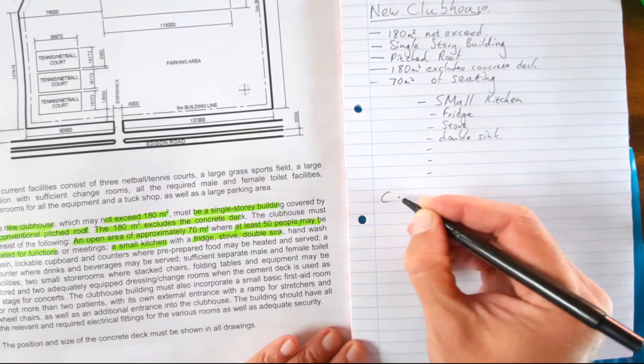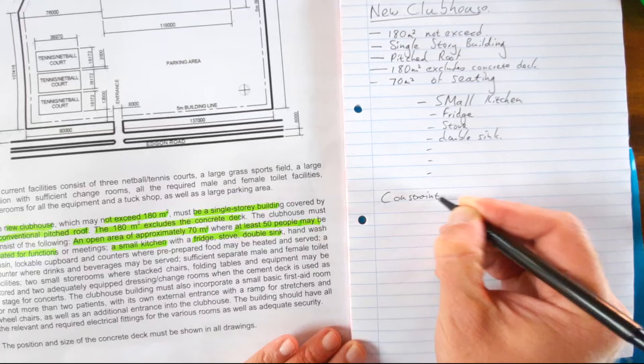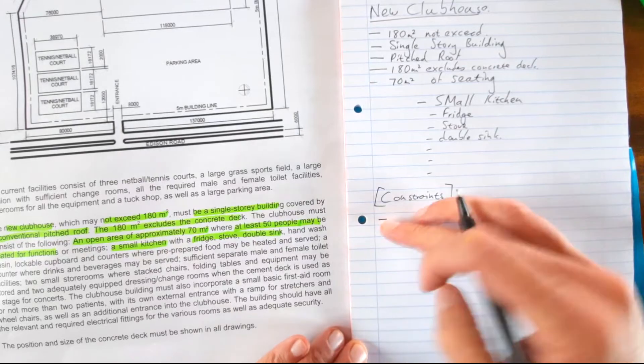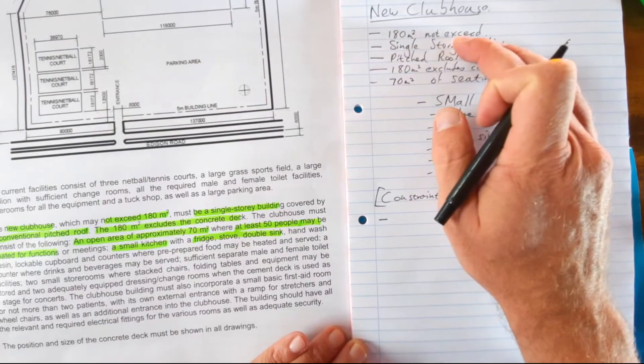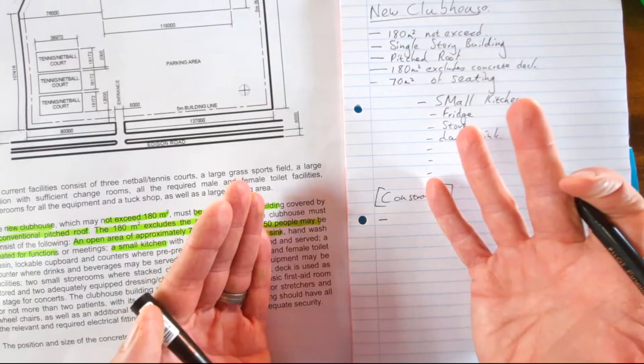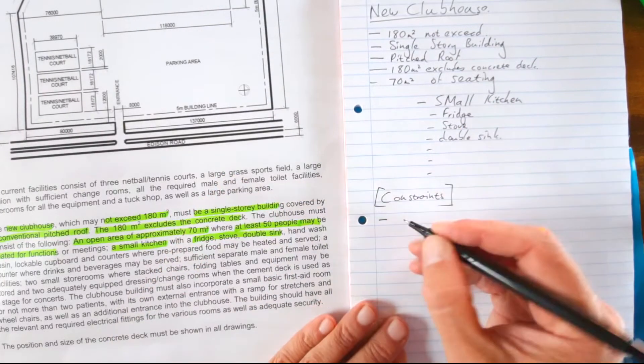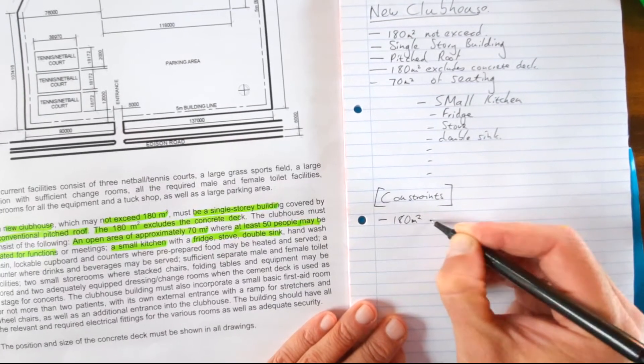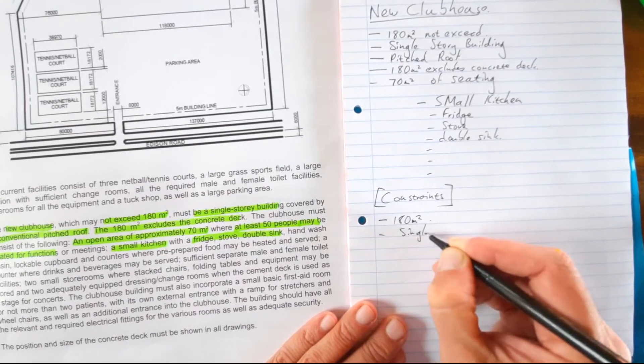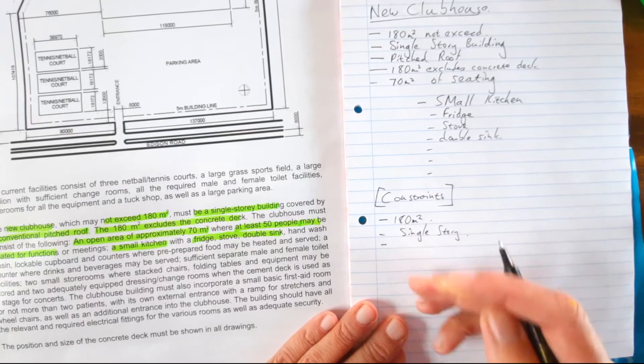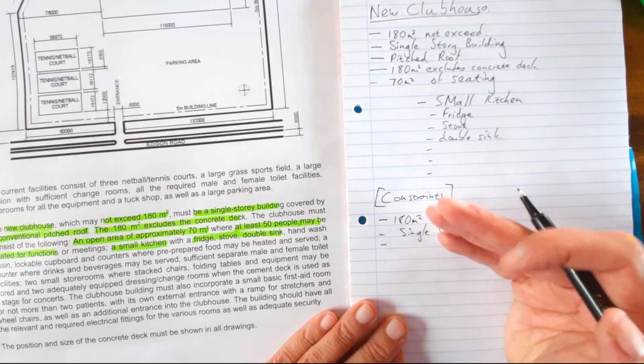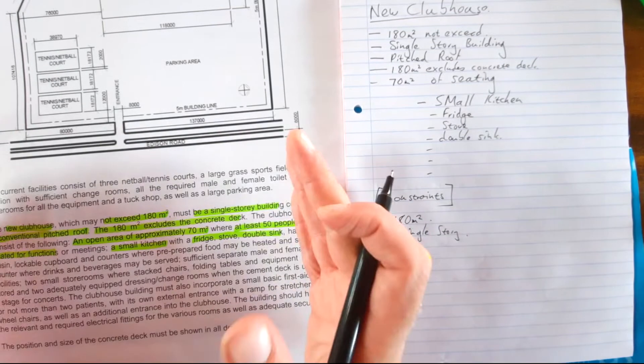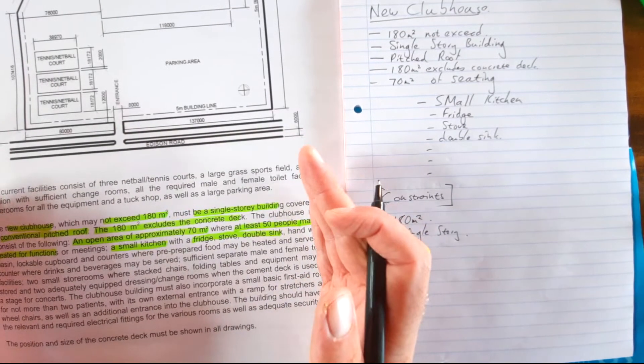In the end here we're going to have constraints. What is a constraint? A constraint is something that restricts you, that limits you. So something that's a specification here is the 180 square meters that you may not exceed, but it's also of course a constraint. So you can again word it: I am constrained by the 180 square meters limit. You are limited by the single story—you can't build a double story. You are limited by the type of roof that's being used. So you can come up with at least three things that are constraining you, that are limiting you in this.